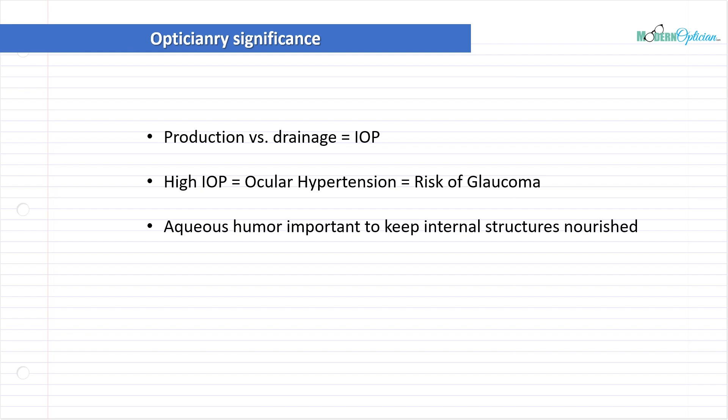Aqueous humor is important to keep internal structures nourished. All those tissues inside that don't have blood coursing through them, they require some kind of nourishment. Aqueous humor is that nourishment. And I want you to remember the angle structure and trabecular meshwork, because when we start talking about glaucoma very shortly, that area is the number one target area that we talk about when it comes to glaucoma.